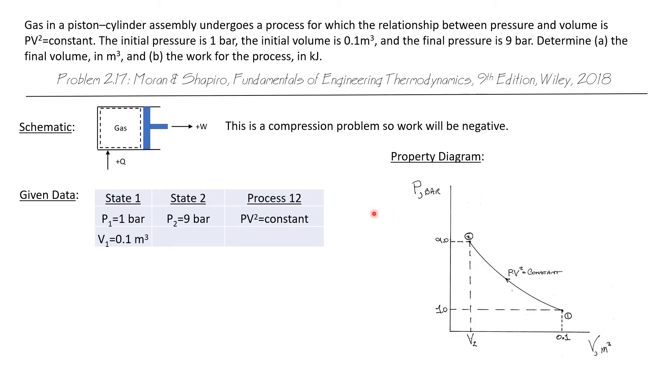The third part of our storyboard is to draw a property diagram. Here an appropriate property diagram would be a PV diagram. I've plotted state one which has a pressure of one bar and a volume of 0.1 cubic meters. It undergoes a polytropic process which, if n is not zero or infinity, if n is any other value, it's going to look like a concave curve. So I've drawn a concave curve from state one to state two. State two ends at nine bar at an unknown volume, so I'm just going to label it V2.